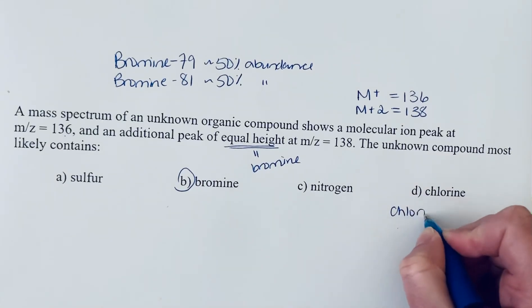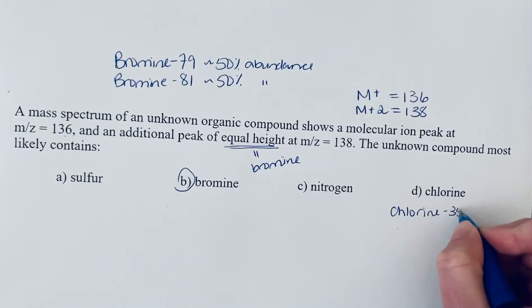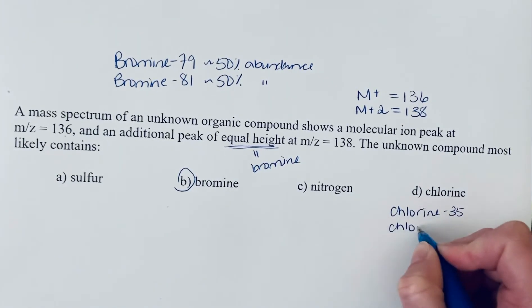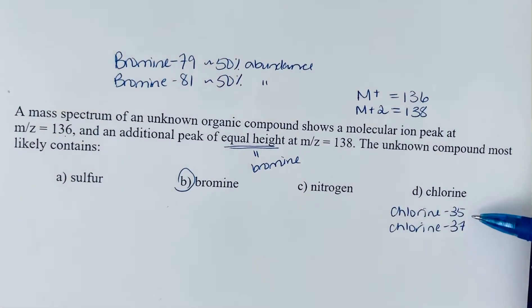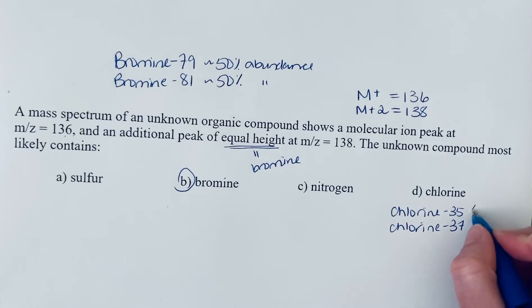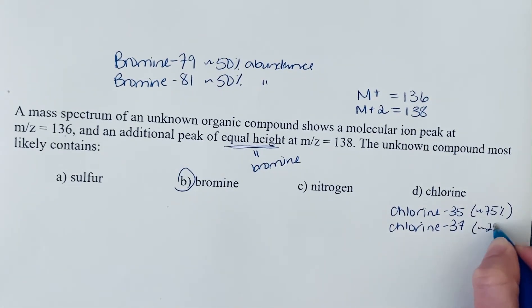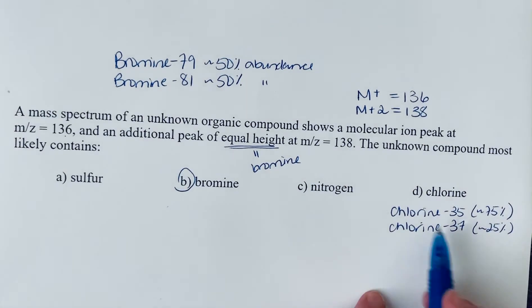The two isotopes of chlorine are chlorine-35 and chlorine-37. Chlorine-35 is the most abundant at approximately 75% of all chlorine, and approximately 25% is chlorine-37.